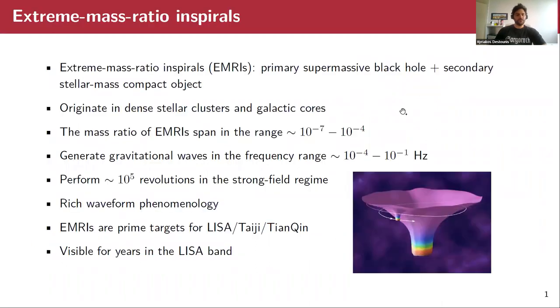So let's start really quick with what is an extreme mass ratio inspiral. It's basically a binary system which consists of a primary supermassive black hole and a secondary stellar mass compact object, black hole or neutron star. These usually originate in dense stellar clusters and galactic cores, and their mass ratio of the secondary over the primary spans in the range of 10 to the minus 7 to 10 to the minus 4.